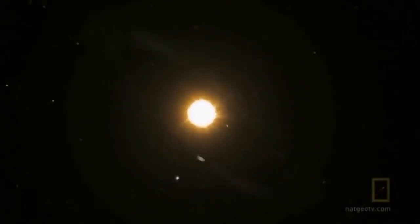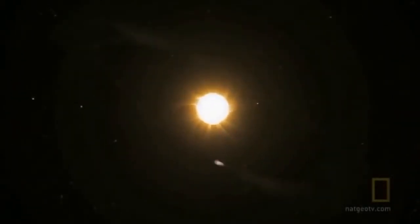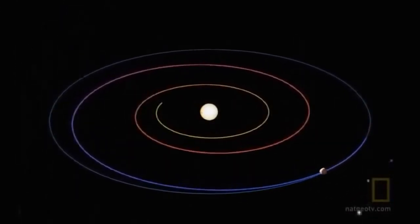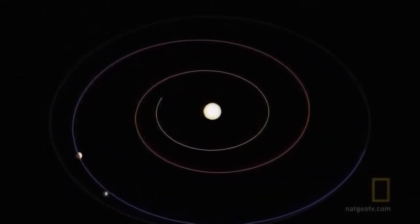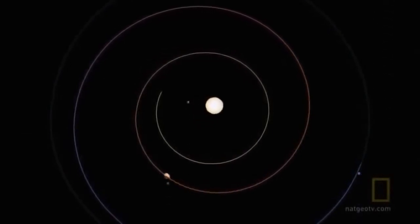For scientists, the tiny orbit challenges long-held notions of how planets form. The fact that the planet was orbiting every four days was a total puzzle until one night in the middle of the night I woke up and said, well, this must be proof that planets migrate inwards. They don't stay put where they are.